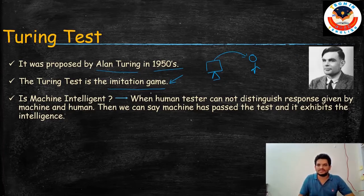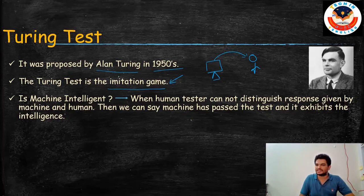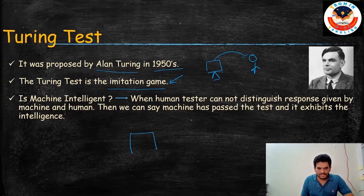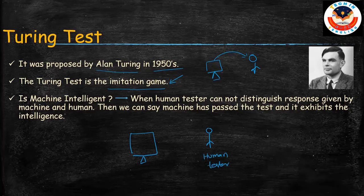How can we say a machine is intelligent? When the machine passes the Turing Test, then we can say that the machine is intelligent. I am explaining this with a simple figure. Here we have the machine, the human tester or examiner or interrogator, and a human respondent — all in different rooms.